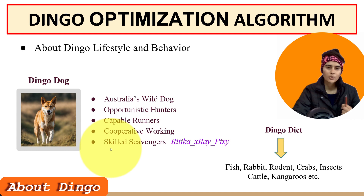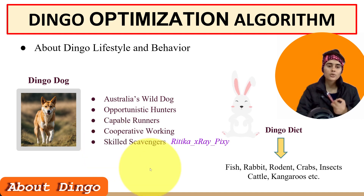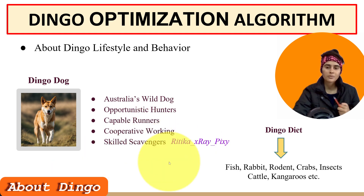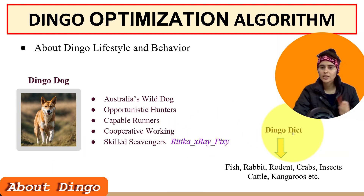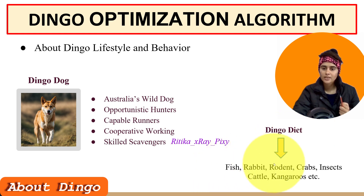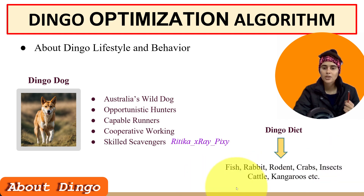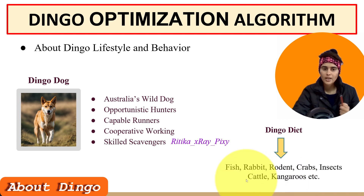Dingoes are also skilled predators with excellent stamina, and are kept as pets by some people, living longer in captivity. Their diet includes small animals like rabbits, fish, rodents, crabs, and insects, as well as large animals. Sometimes they do group hunting for large animals like cattle and kangaroos.